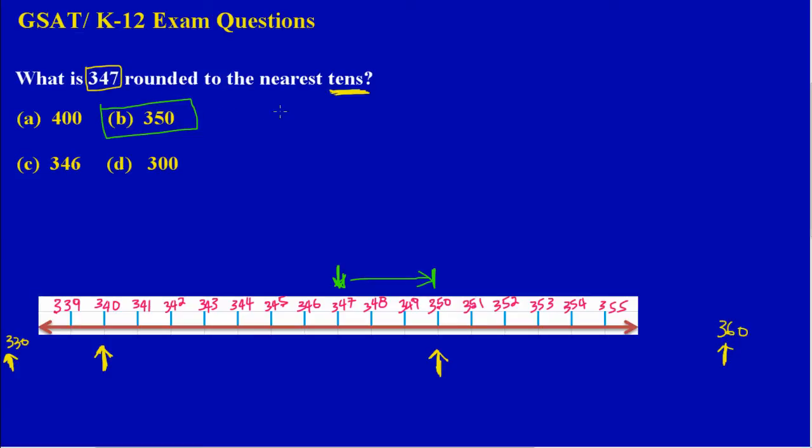In class the teacher would say if you're rounding off 347 to the nearest ten, you know that this is the units column, this would be the tens column, and this would be the hundreds column.